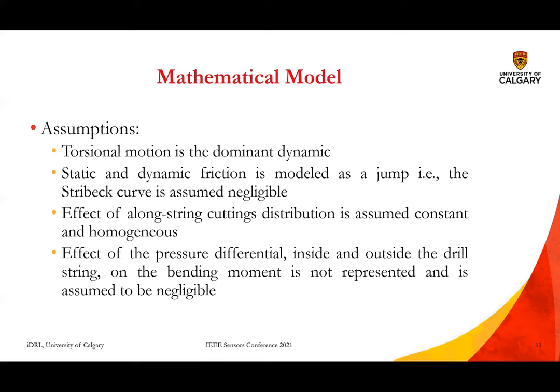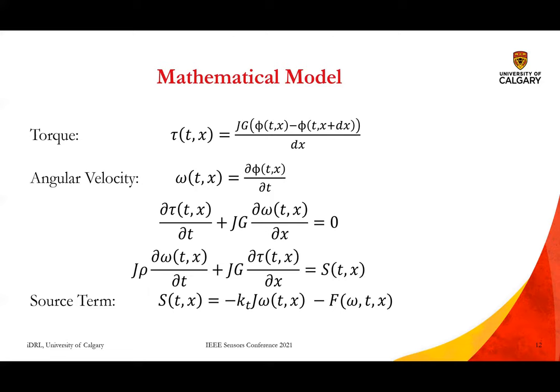Regarding the mathematical model, the main assumptions are: torsional motion is the dominant dynamic; static and dynamic friction are modeled as a jump (the Stribeck curve is assumed negligible); the effect of long-string cuttings distribution is assumed constant and homogeneous; and the effect of pressure differential inside and outside the drill string on the bending moment is assumed negligible. The torque and angular velocity are represented accordingly, and the source term including friction is derived from these. Three coupled equations essentially constitute the entire model and form the basis for its success.